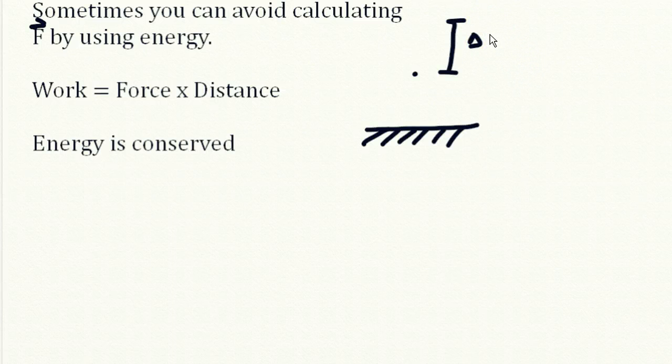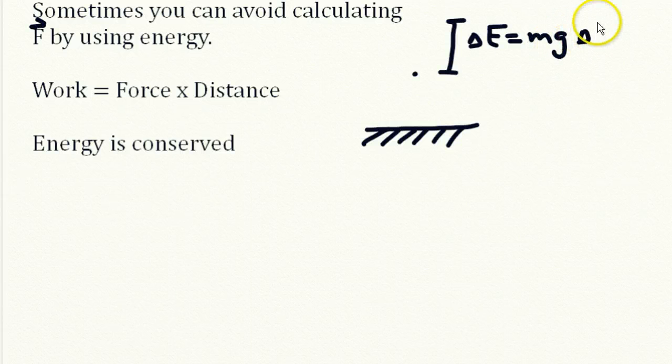We'll measure changes in the energy of the particle just by measuring changes in the height of the particle. So the changes in the energy is equal to the mass times the gravitational constant times the change in the height.